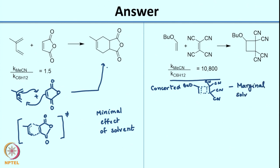But is a marginal solvent effect what is observed? No. What you see is a large solvent effect. So how do you explain this? Obviously there has to be some charged intermediate being formed. So if you think of a stepwise mechanism for this reaction...